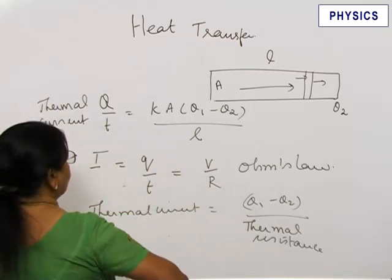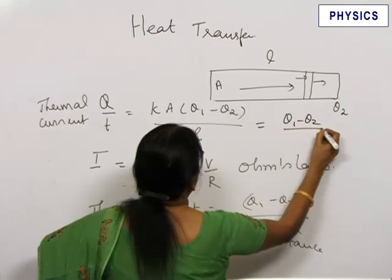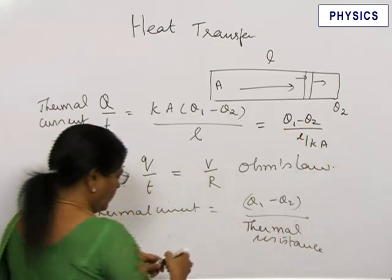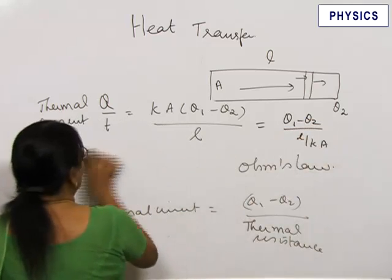Rewrite this equation. Rewrite this keeping only the difference in temperature. So it will become L by K A. So the term L by K A corresponds to thermal resistance.